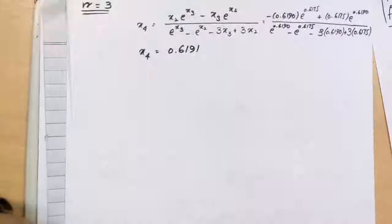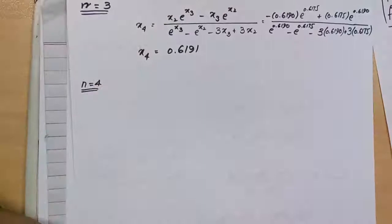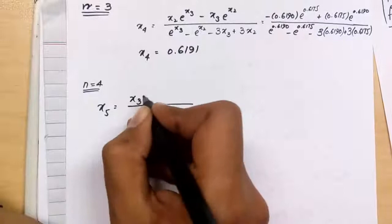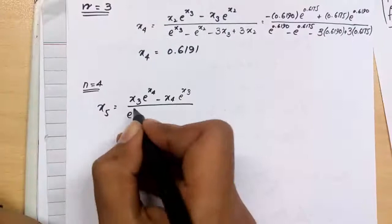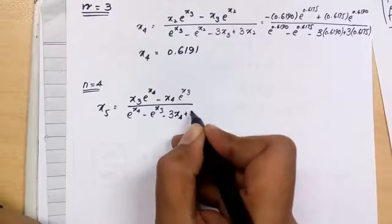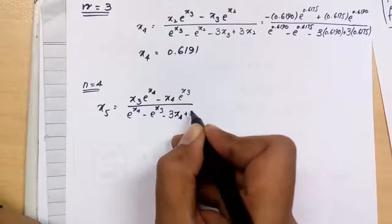Do the same method again and again till you get the values of two consecutive x values the same. In our example, we get x_4 and x_5 the same, so after 4 iterations we got the true value.